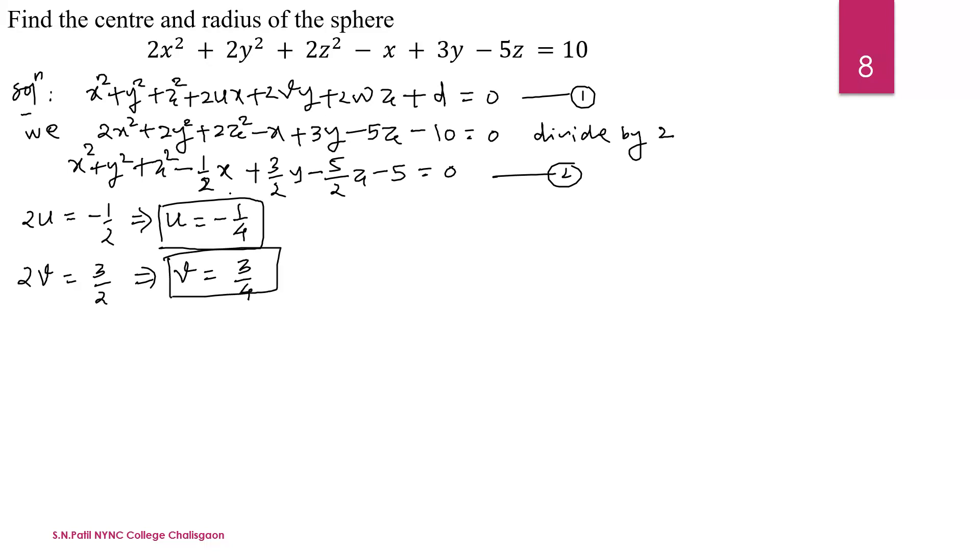Now the coefficient of z is 2w and the coefficient of z is -5/2. Simplify. 2 is divided here. That is w is equal to -5/4. And the last, the constant term in equation 1 is d. And here, here in equation 2, the constant term is -5.